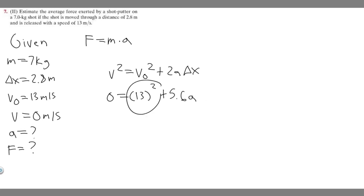And if we want to solve for a, we should move the 13 squared to the other side and then divide both sides by 5.6. So if we move this to the other side, it's going to be minus 13 squared equals 5.6a. So if we divide both sides by 5.6, we're going to get a. So if you go ahead and do this, you're going to get a equals minus 30.17.